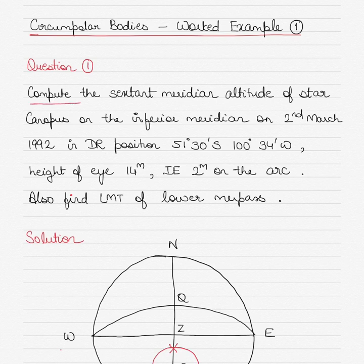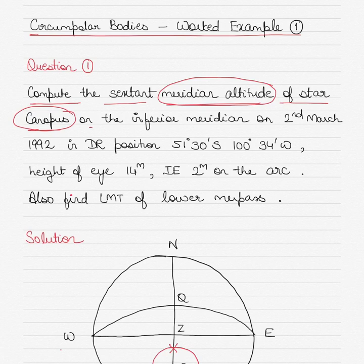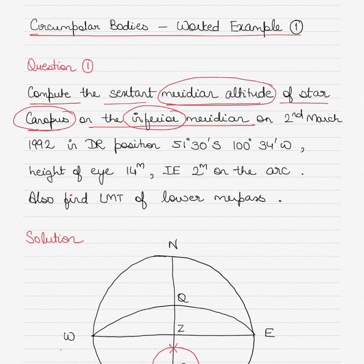The question is: compute the sextant meridian altitude of star Canopus. When we say meridian altitude, that means the altitude of the star when it is at its meridian passage. Circumpolar bodies are those bodies that do not rise or set — they do not go below the rational horizon. The star's name is Canopus, and the star is on its inferior meridian. I showed you in my previous video what an inferior meridian and a superior or upper meridian are.